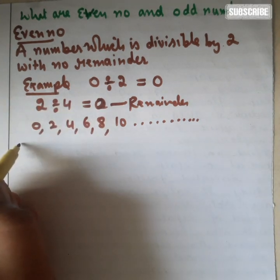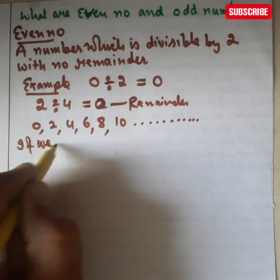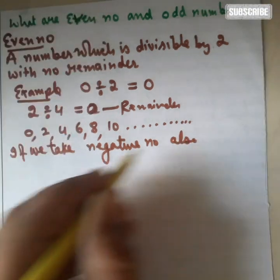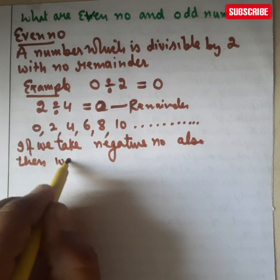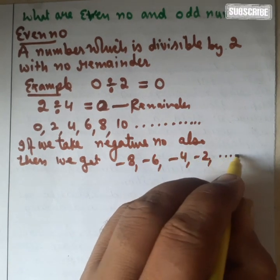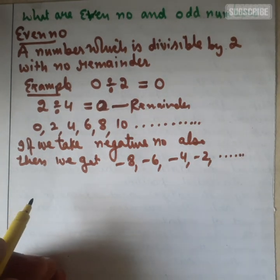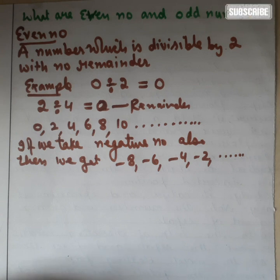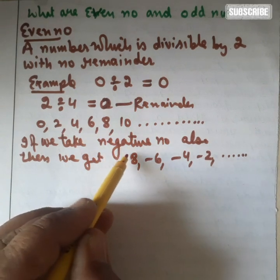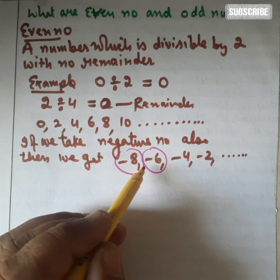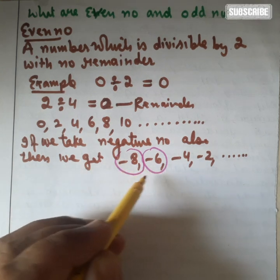In even numbers, some negative numbers also exist. If we take negative numbers, we get minus 8, minus 6, minus 4, minus 2, and so on. We conclude that if a number is divided by two and the result gives zero as a remainder, then those numbers are even numbers. Negative numbers like minus 8, minus 6 are all divisible by two.